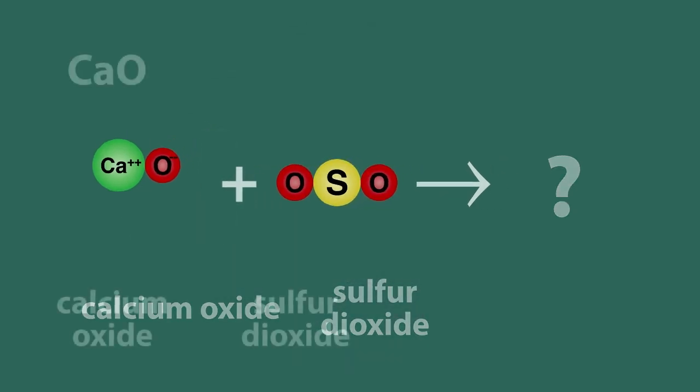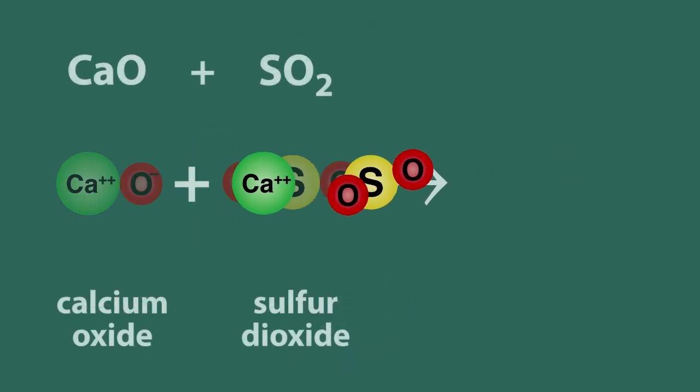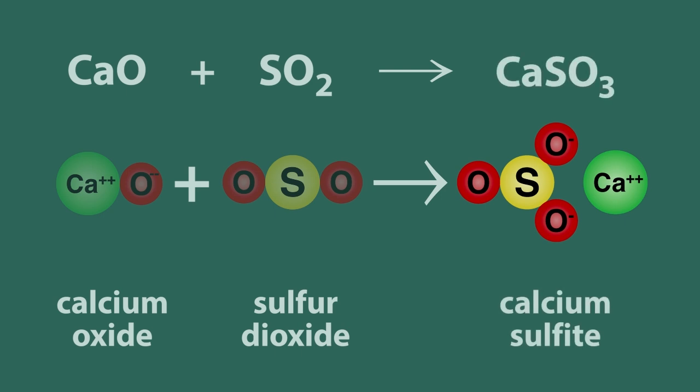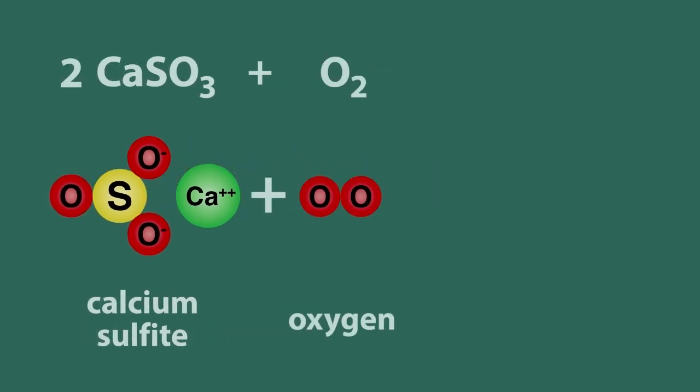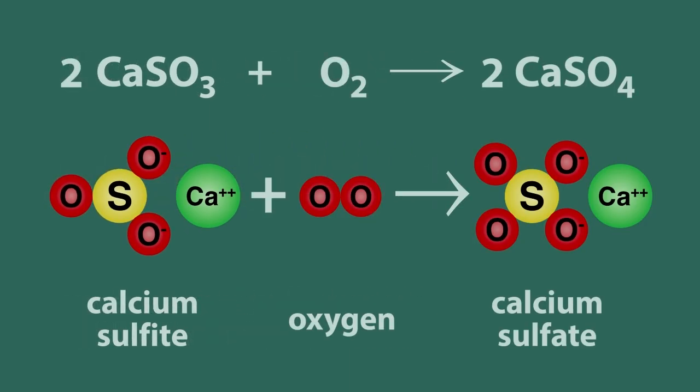Calcium oxide plus sulfur dioxide makes calcium sulfite, that's CaSO3. The sulfite can be reacted with oxygen to make gypsum, calcium sulfate, CaSO4, which is the main ingredient of wall plaster.